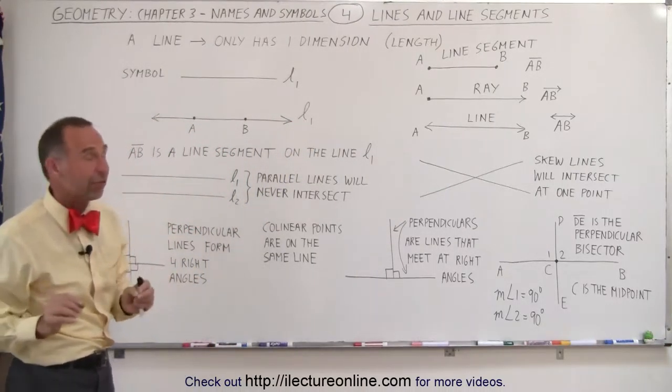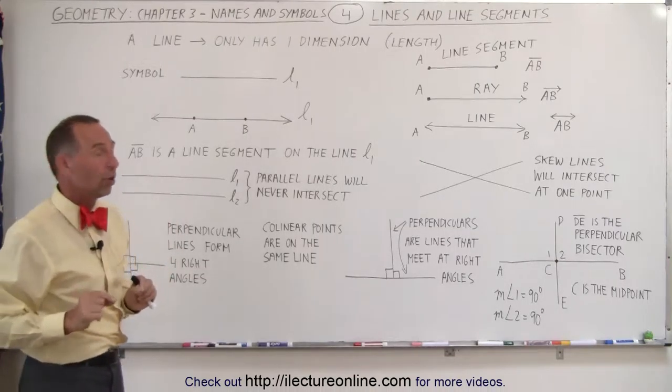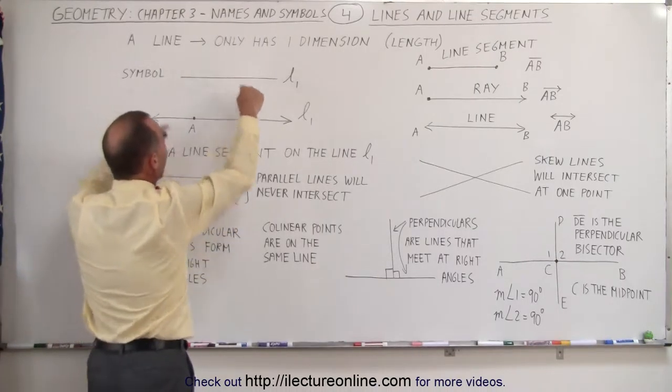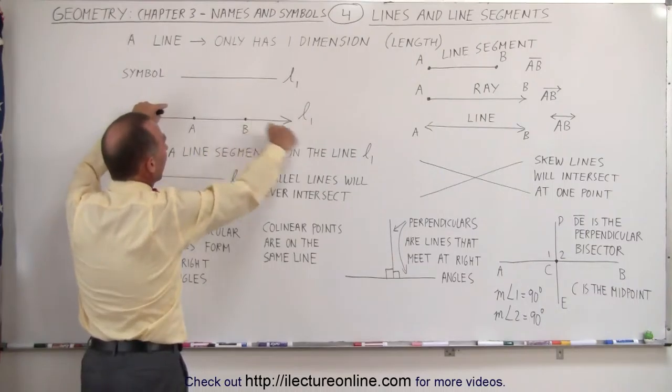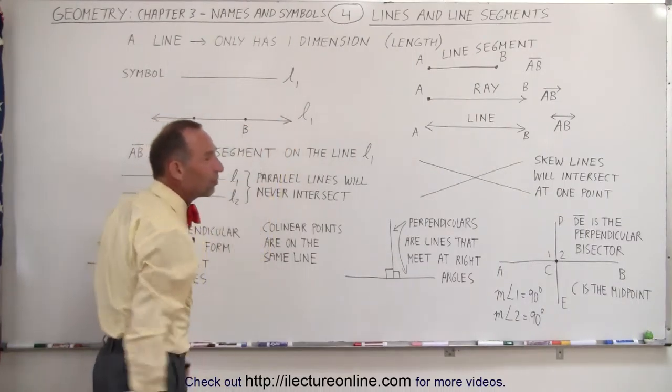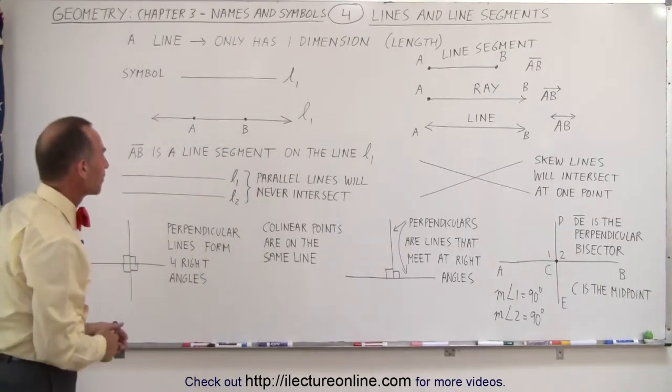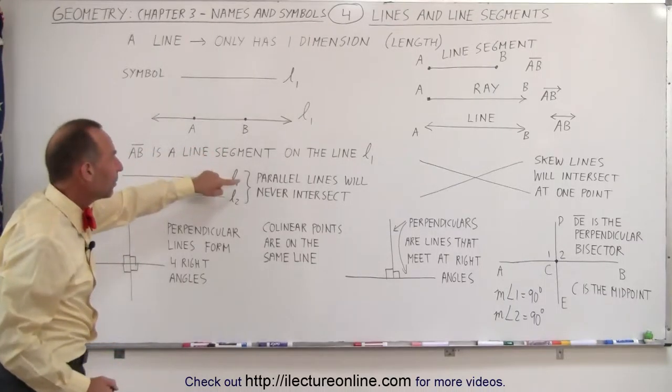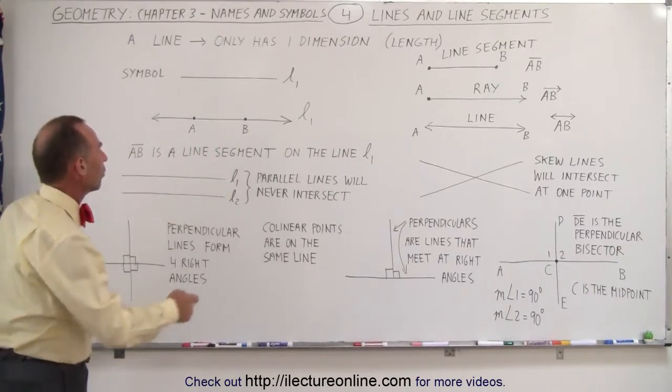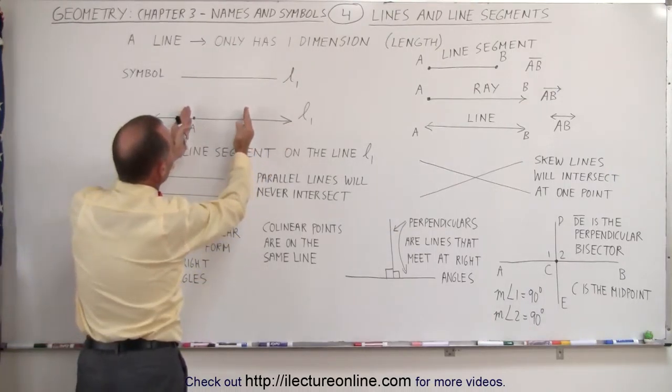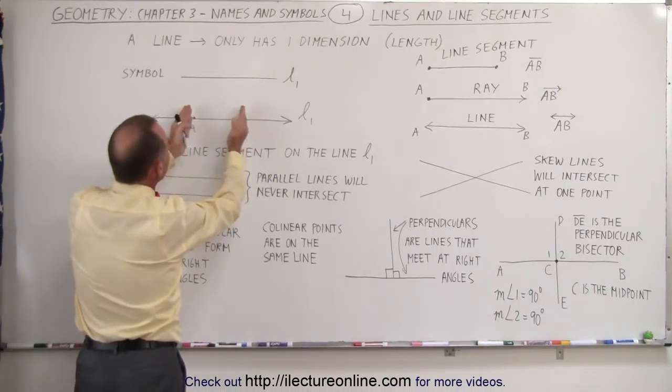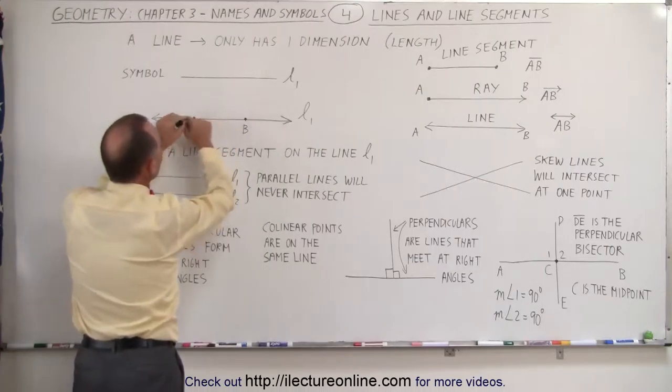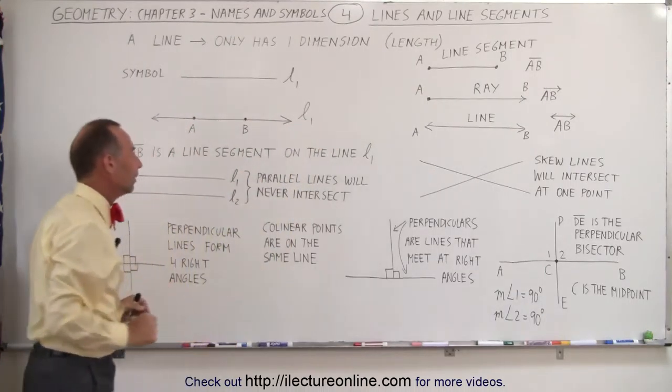Usually a line is defined by two points. All you need is two points anywhere on a plane. You draw a line between those two points, and that defines the direction of the line. Here we have AB is a line segment on the line L1. We can say this piece of the line between A and B can be considered a line segment on the entire line L1.